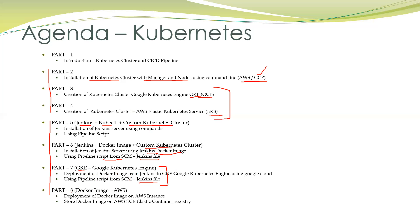In part eight, we will use Docker image on AWS. This is purely AWS. We will deploy the Docker image to an AWS instance, and we will also push the Docker image to AWS ECR, the Elastic Container Registry. So demo eight is purely AWS, and demo seven is totally based on GKE, which is Google Cloud GCP.